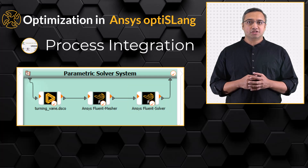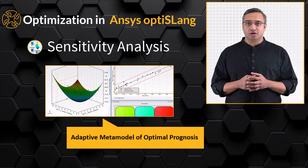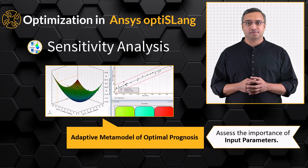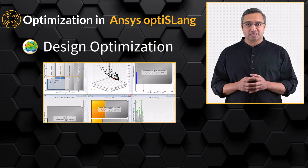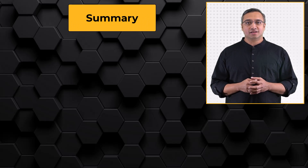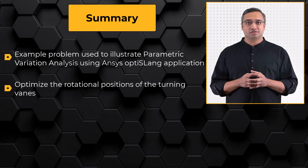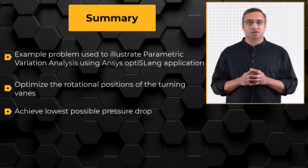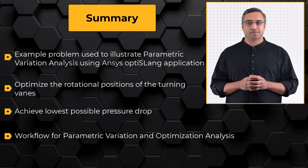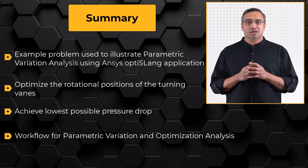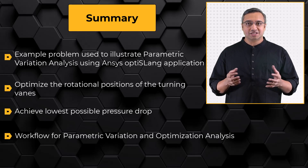The process integration step is followed by sensitivity analysis using the adaptive metamodel of optimal prognosis, or AMOP approach, to assess the importance of input parameters. Finally, we will perform single-objective optimization. To summarize, in this lesson we discussed the example problem used to illustrate parametric variation analysis for ANSYS Fluent software using ANSYS OptiSlang. The goal is to optimize the rotational positions of the turning vanes to achieve the lowest possible pressure drop, and we briefly talked about the workflow that will be followed. Utilizing a standalone OptiSlang interface, we will undertake process integration, sensitivity analysis, and optimization. With this, we come to the end of the lesson.